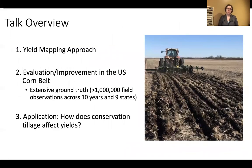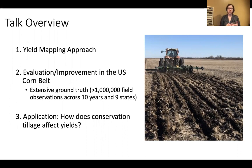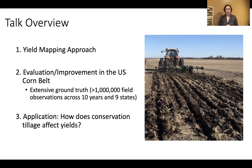Because this talk has a couple different pieces, first I'll be introducing our yield mapping approach that we use in our lab group, and then presenting a new evaluation and some improvements to it applied in the United States Corn Belt using an extensive ground truth data set. Then I'll show an application answering the question: how does conservation tillage affect yields?